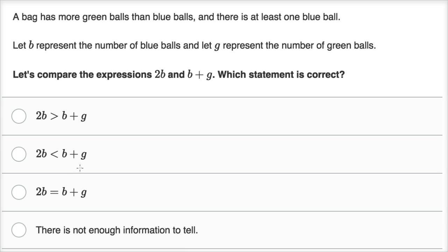All right, let's work through it together, and let's see what information they are giving us. So this first sentence, they say, a bag has more green balls than blue balls. So we can translate that in math language, as the number of green balls is greater than the number of blue balls.